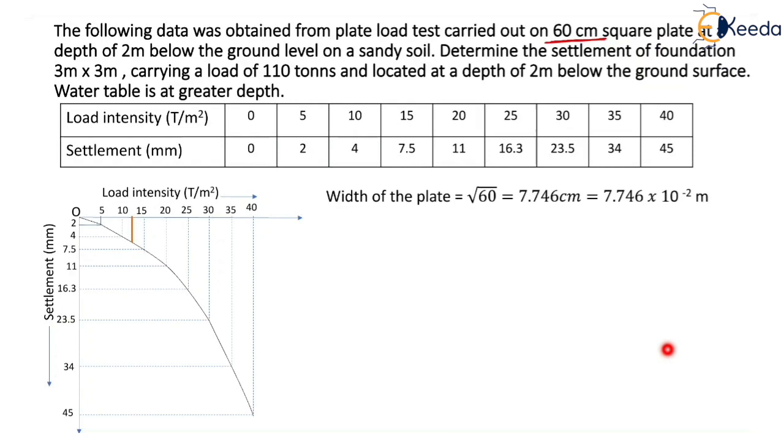Width of the plate equals square root of 60 because 60 cm square is the area of the plate. So width of the plate becomes 7.746 cm, which equals 7.746 × 10^-2 meters. Size of the footing is 3m by 3m.